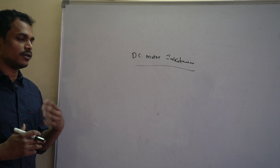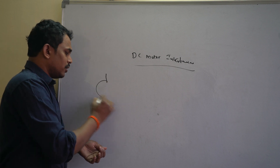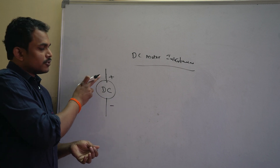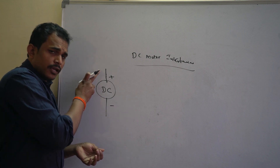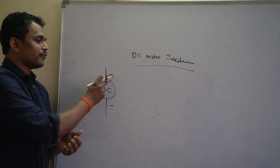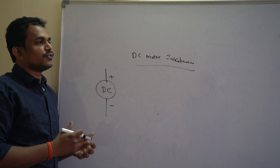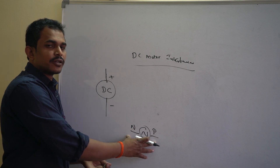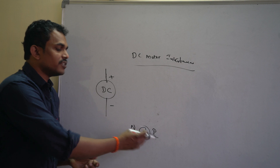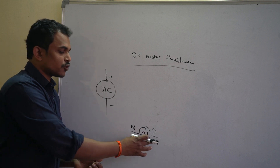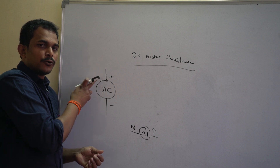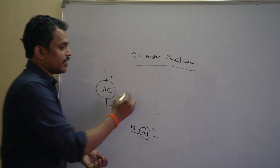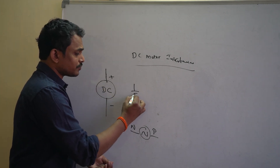If you look at the simple construction of a DC motor, you will find two poles — plus and minus. You have to follow polarities in a very strict manner with DC. In AC, you don't need to worry about phase or neutral or reverse connections, but with DC devices you must strictly observe which terminal is plus and which is minus.